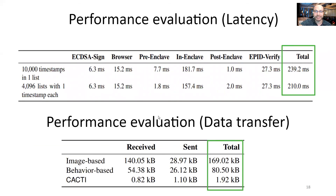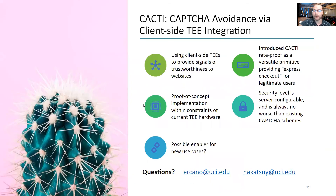Our latency evaluation shows that CACTII is able to generate and verify rate proofs in under a quarter of a second. Moreover, CACTII can reduce bandwidth utilization by 98% compared to existing CAPTCHA systems. We have more evaluation figures in the paper if you'd like to check them out. The main takeaways are that we have shown an initial approach for using client-side TEEs to enhance users' experience on the web without reducing security, and we anticipate this design pattern can also support other use cases in the future. Thank you for listening, and we look forward to answering your questions.